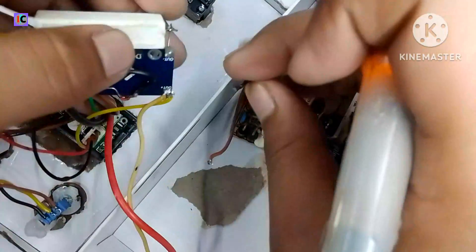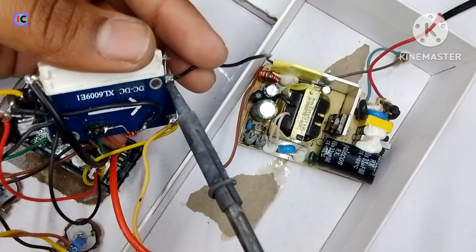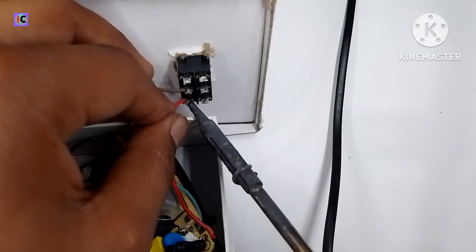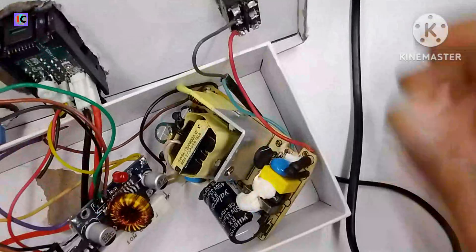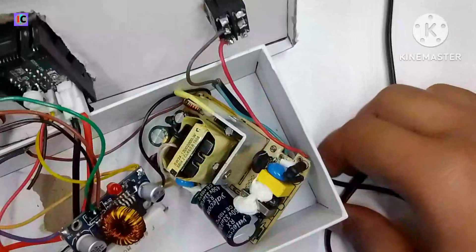Now after this we have to connect the 12 volt SMPS output to the module. And these are the AC wires connected through the switch so that we can turn on and off the power supply as we need.